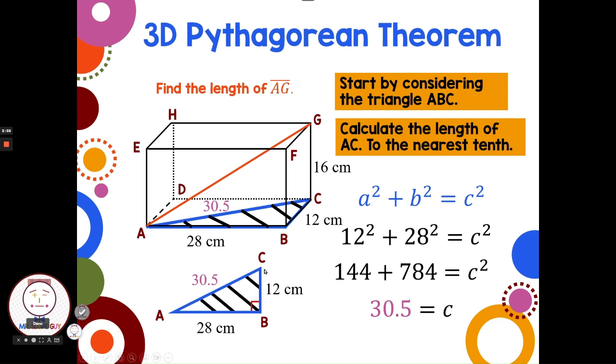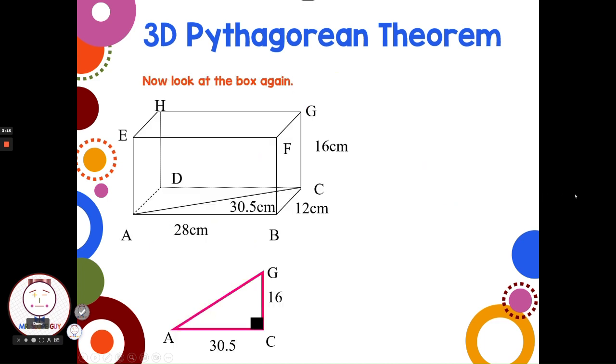30.5 is from A to C in two dimensions, or if we look at it in three dimensions, it's from A to C here. So now that I've found from A to C, now I can use the Pythagorean theorem a second time and look at finding that space diagonal, the length of AG. So let's now look at this triangle. We have this leg that we found of 30.5, we have a leg of 16 which was already given. So now that I have two of the three sides of a right triangle, I can use the Pythagorean theorem.